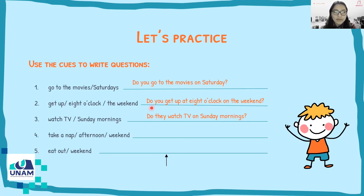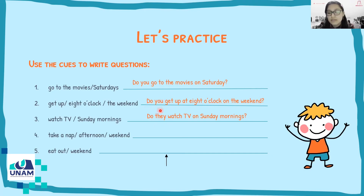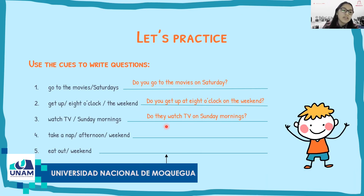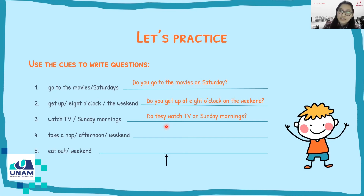Here the auxiliary is still 'do' but the subject changed — I used 'they' instead of 'you.' Remember: we use the auxiliary 'do' when the subject is I, you, we, or they. We use 'does' when the subject is he, she, or it.